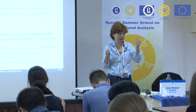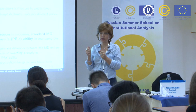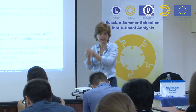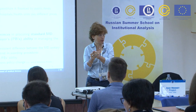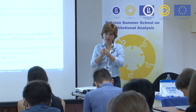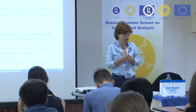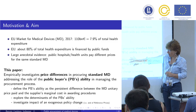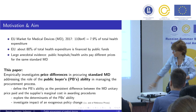We define public buyer ability as the persistent difference between the medical device unitary price and the supplier marginal cost in awarding such a good. If I am good enough, I know more or less what it costs to produce that syringe, and I want to go closer to that supplier cost. The closer I am to the supplier cost, the less public money I spend, and the more able I am as a public buyer.